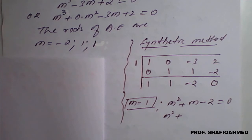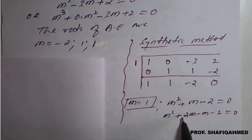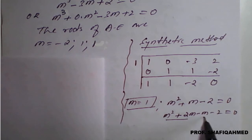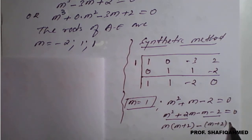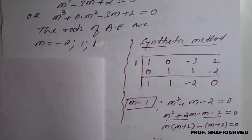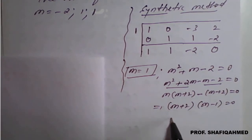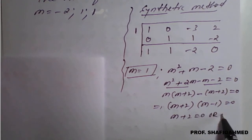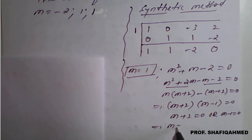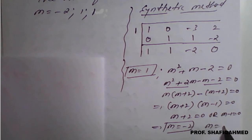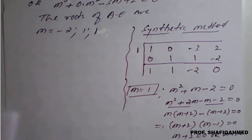We write m² + 2m - m - 2 = 0. Taking m common from the first pair: m(m + 2), and taking -1 common from the second pair: -1(m + 2). So (m + 2)(m - 1) = 0. Equating each factor to zero: m + 2 = 0 gives m = -2, and m - 1 = 0 gives m = 1.